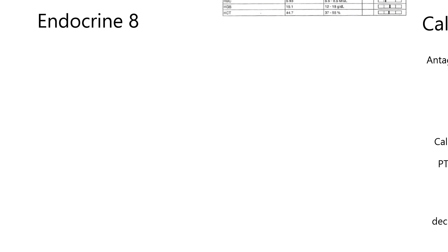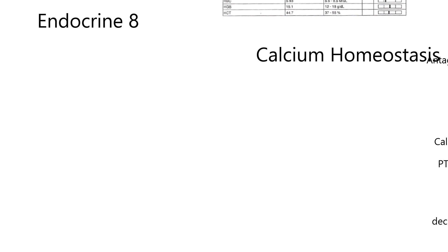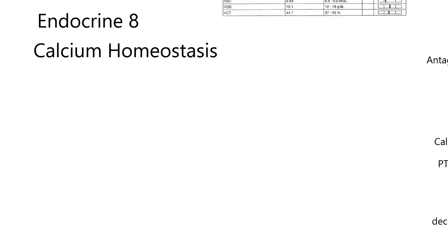Now we're ready for what I'm calling Endocrine 8, and the real title is Calcium Homeostasis. Homeostasis means keeping something constant, and now we're talking about calcium — keeping blood levels of calcium in some normal range, because everything that's in the blood tries to be in some normal range.